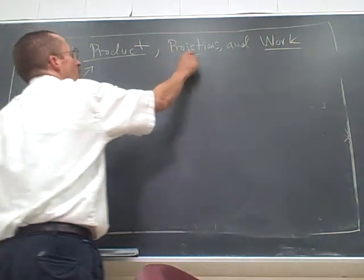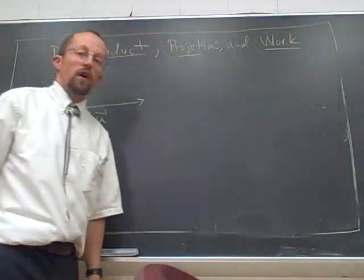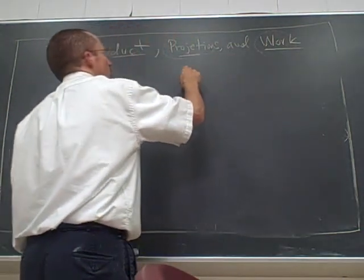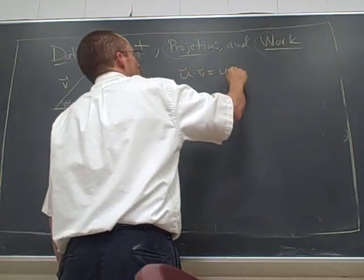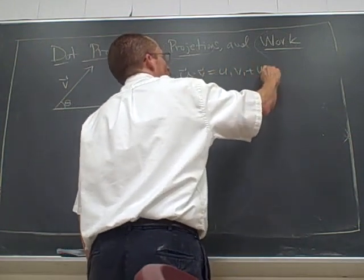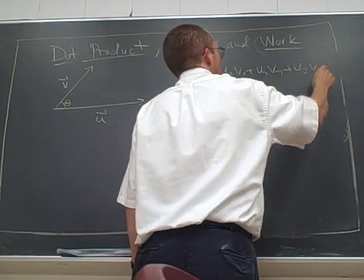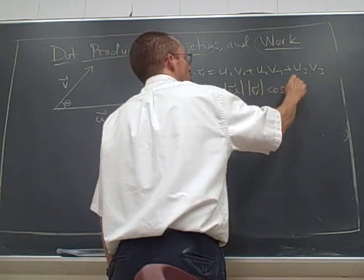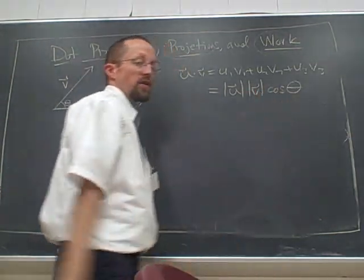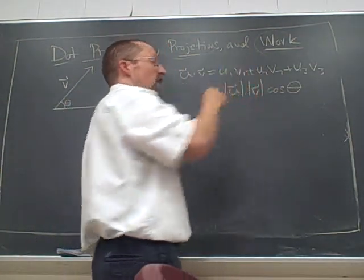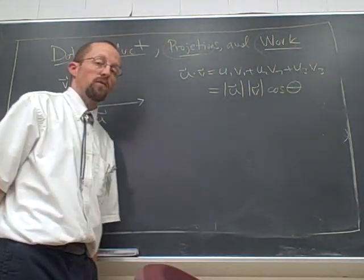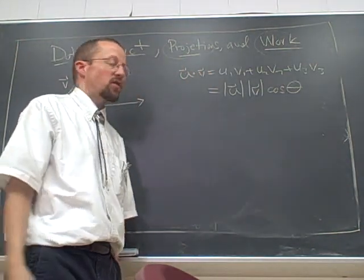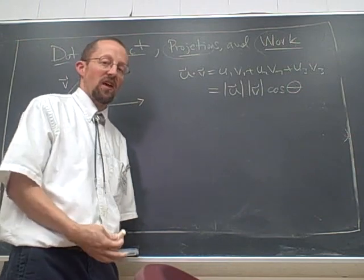A little bit more about the dot product focusing on its role in projections and calculating work when you have forces. One question that often comes up is we have these formulas for the dot product. One of them is easy to calculate from components. The other is easy to calculate from geometric information. But a lot of people still say, well, what is the dot product? You've told me what it's useful for, but what is it? How should I think about it?